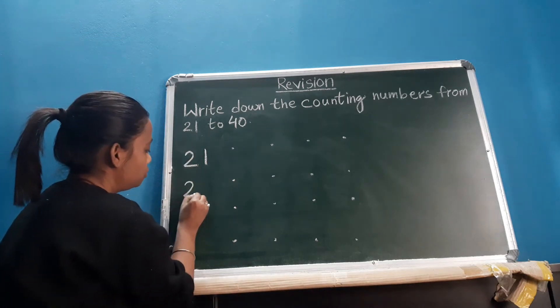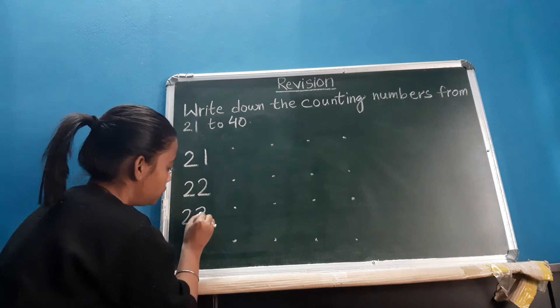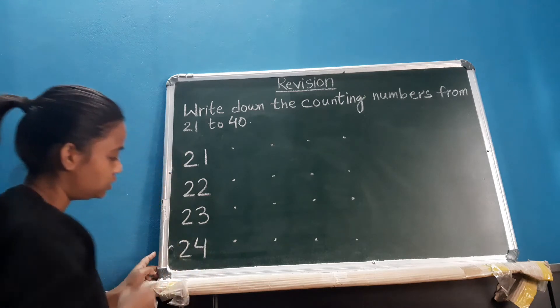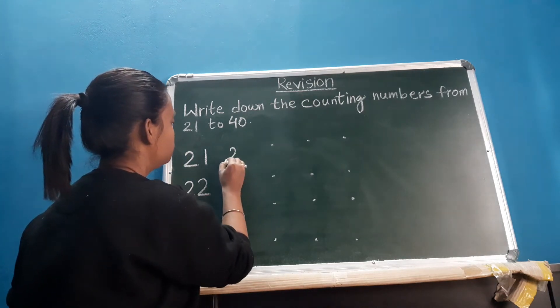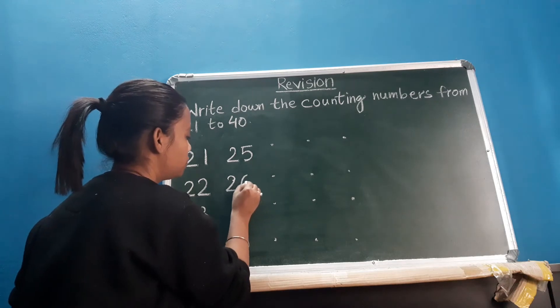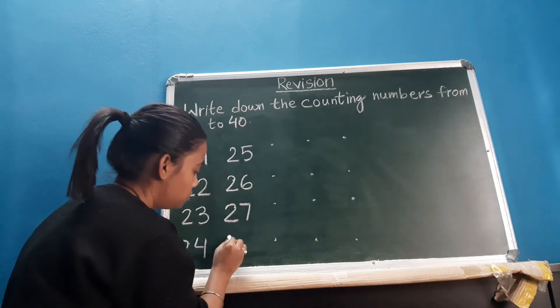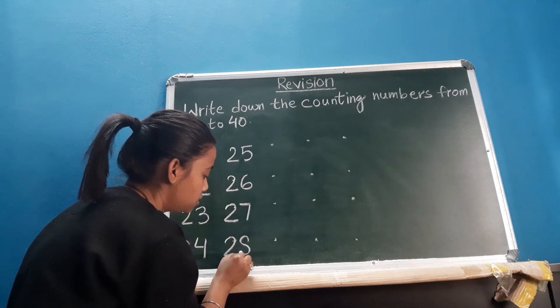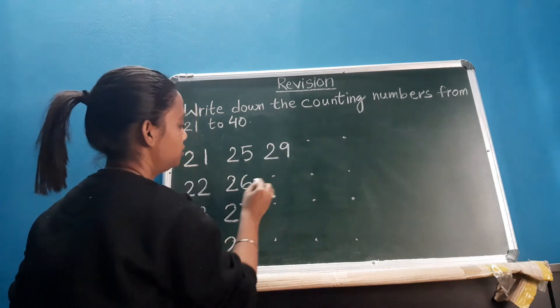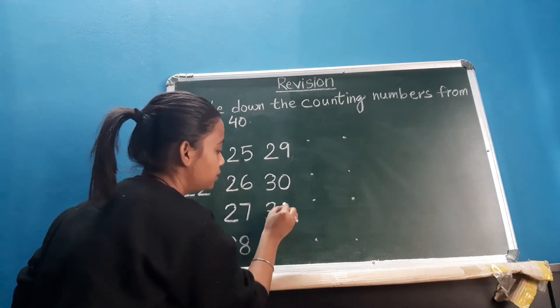After that 22, and then 23, and then 24, then 25, 26, 27, 28, 29, 30.